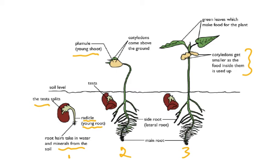The green leaves will now start to make food for the plant. As the photosynthetic area increases, the plant will make enough food for a net gain in mass. However, unless the leaves develop a large enough surface area so that the rate of photosynthesis exceeds the rate of respiration, there will be a decrease in mass because the food stored in the cotyledons is being used up.